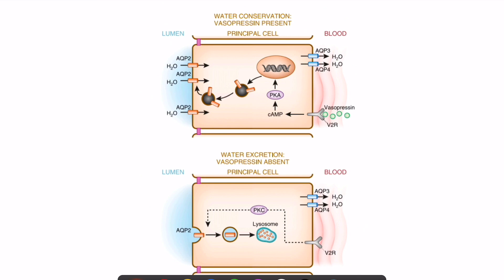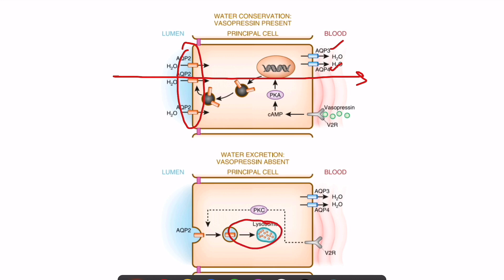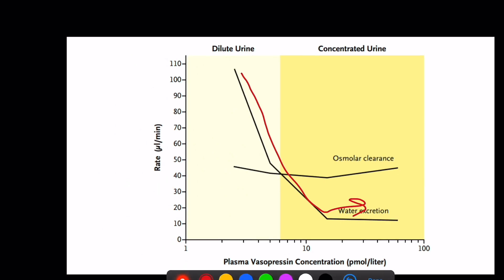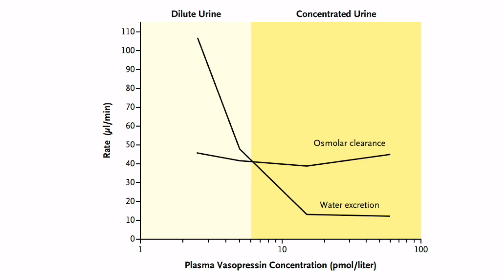In summary: vasopressin binding increases cyclic AMP, resulting in increased aquaporin-2 concentrations, moving water from the luminal side into the blood. Aquaporins 3 and 4 are already present in the basolateral regions. In the absence of vasopressin, aquaporin-2 is reabsorbed and lysed. As vasopressin concentration increases, water excretion drastically decreases, conserving water. In the next class, we will discuss disorders of this mechanism and how to recognize and treat them in patients.